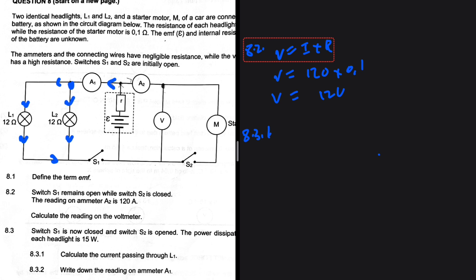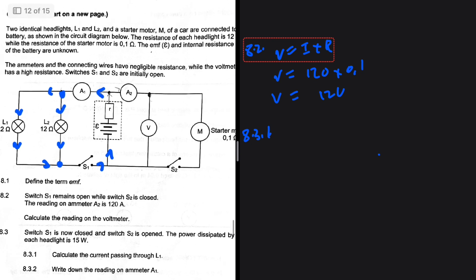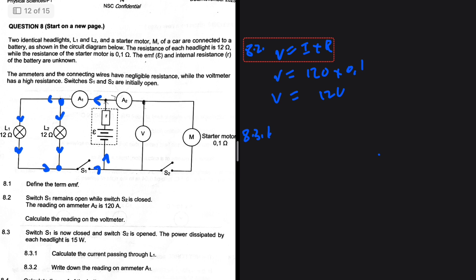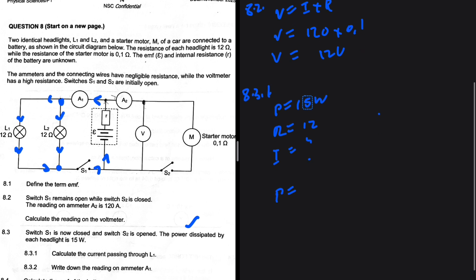So a proportion of the current flows in that direction as well. There we start having total current, the cycle continues. Okay, 8.3.1: calculate the current passing through L1. So we're given the power dissipated by each satellite. So the power is 15 watt and then L1 we're given the resistance which is 12 ohm. So we want the current.